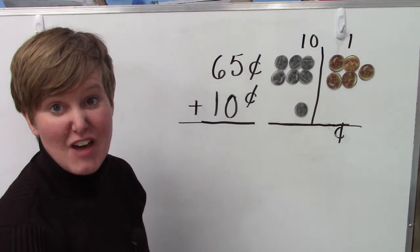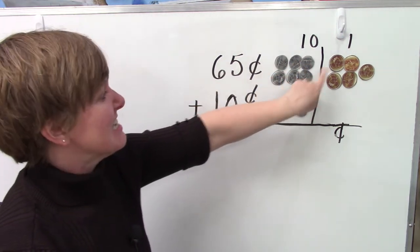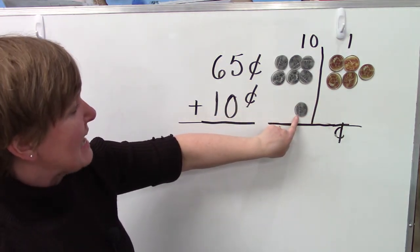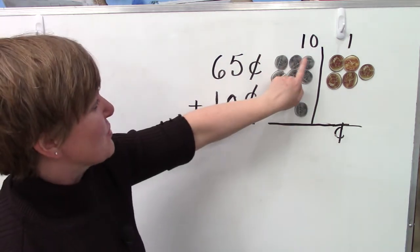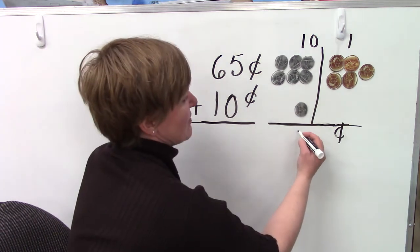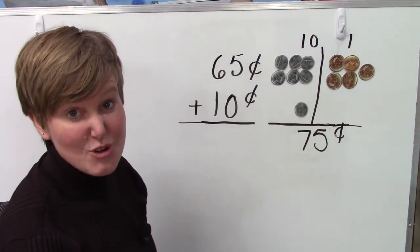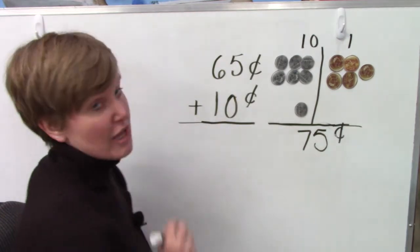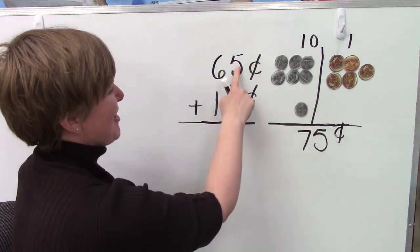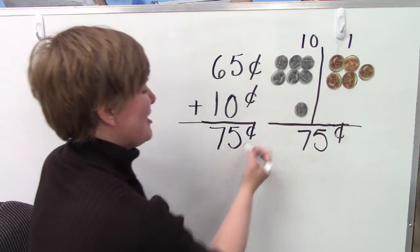Here we're adding sixty-five plus ten. We have six dimes — ten, twenty, thirty, forty, fifty, sixty. Sixty-one, sixty-two, sixty-three, sixty-four, sixty-five. And we're going to be adding ten cents to sixty-five. Let's try counting — ten, twenty, thirty, forty, fifty, sixty, seventy. Seventy-one, seventy-two, seventy-three, seventy-four, seventy-five. Sixty-five plus ten is seventy-five. Let's try that here with our addition problem. We're going to start in the ones place — five plus zero is five. And six plus one is seven. Seventy-five cents.